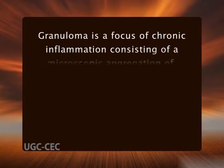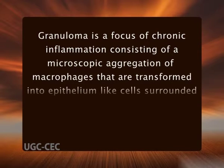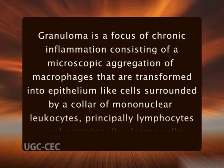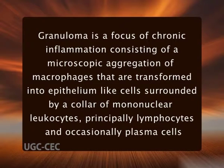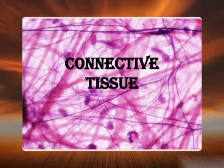A granuloma is a focus of chronic inflammation consisting of a microscopic aggregation of macrophages that are transformed into epithelioid-like cells, surrounded by a collar of mononuclear leukocytes — principally lymphocytes and occasionally plasma cells. Older granulomas develop an enclosing rim of fibroblasts and connective tissue. Frequently, epithelioid cells fuse to form giant cells in the periphery or center of granulomas. These giant cells may attain diameters of 40 to 50 micrometers and contain 20 or more small nuclei arranged either peripherally or haphazardly.